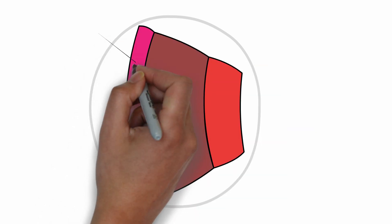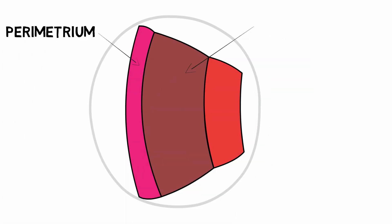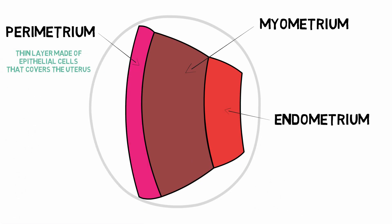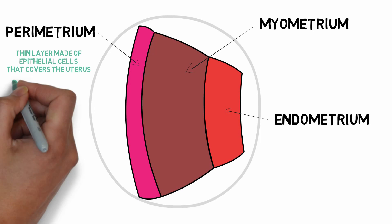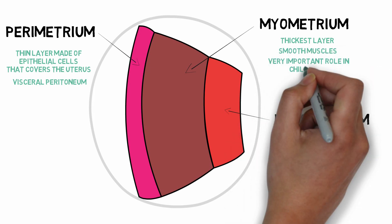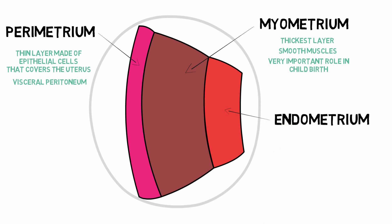The wall of the uterus is made up of three layers: the perimetrium, myometrium, and the inner endometrium. The perimetrium is a thin layer of epithelial cells covering the uterus from outside — it is the visceral peritoneum. The myometrium is the central and thickest layer, made up of smooth muscle cells; it plays a very important role in childbirth as it undergoes contractions and relaxations which propel the fetus outside.